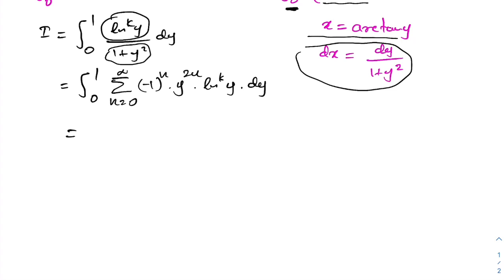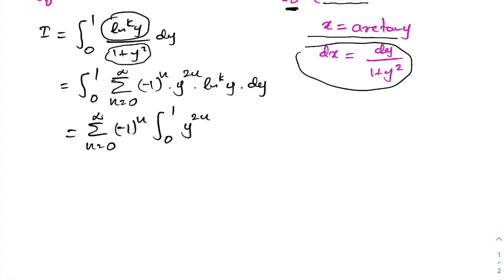Now we can simplify by interchanging the integral sign and sigma notation, giving the sum from n = 0 to infinity of (−1)^n times the integral from 0 to 1 of y^(2n) times the natural log of y raised to the k power, dy.